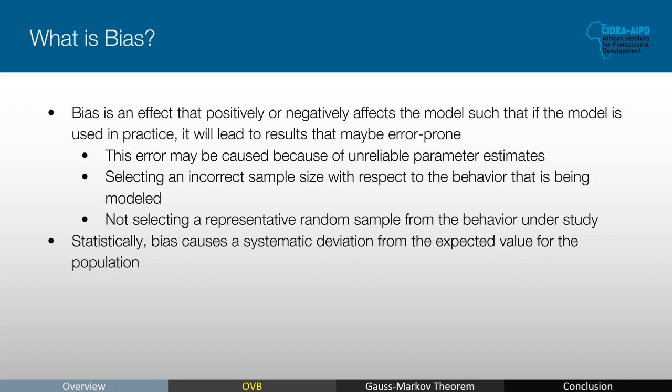On the other hand, if you have a designed experiment to study the effect of a new catalyst in the production of petroleum, where you control pretty much everything including the quantities of the catalyst and reactants and the environment, then you may not need a very large sample size. So bias can also occur if a representative sample from the behavior under study is not selected. For example, if a study is conducted to measure the effect of a new government policy on people in Rwanda, you cannot survey people from Tanzania or Uganda — you have to survey the people in Rwanda. A representative sample is important.